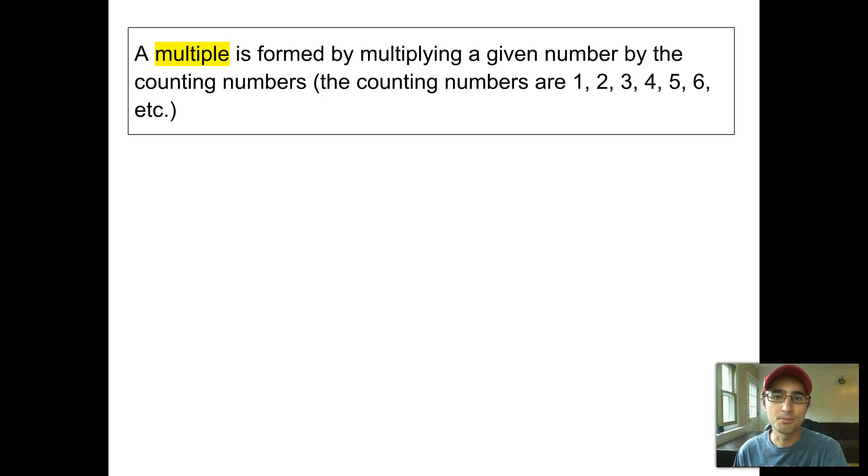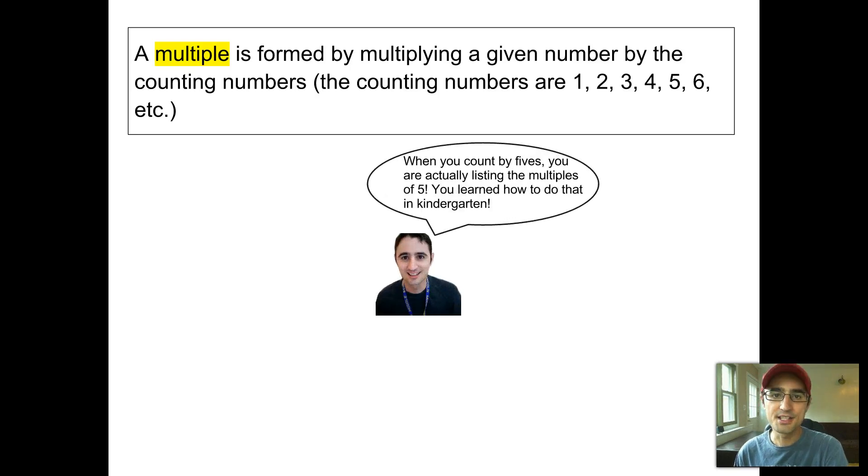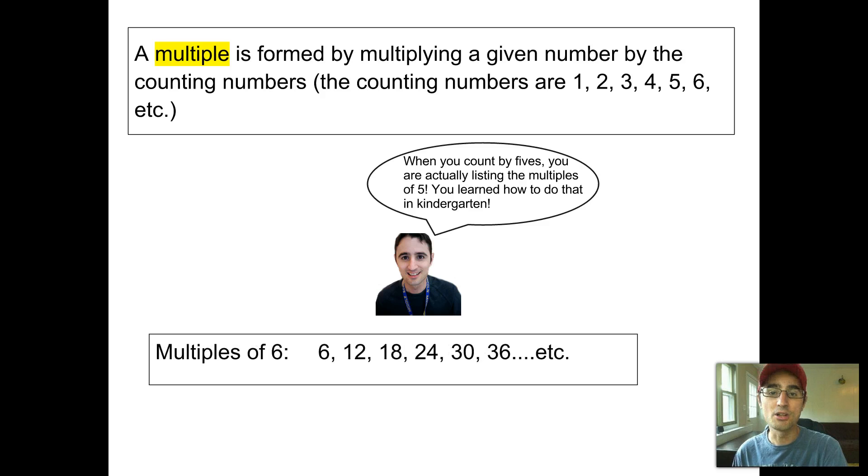Now let's shift gears and talk about multiples for a minute. A multiple is formed by multiplying a given number by the counting numbers. Remember, we start with 1 when we're counting. When you count by fives, you're actually listing the multiples of five. You learned how to do that in kindergarten. So multiples shouldn't really be a new thing. Let's take a look at some multiples of six. Now I do want you to write this down.